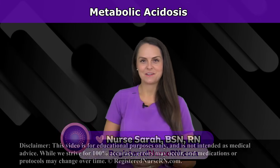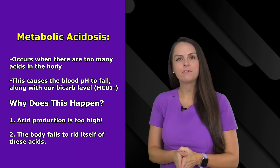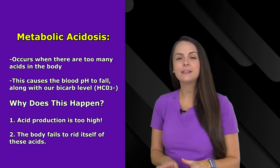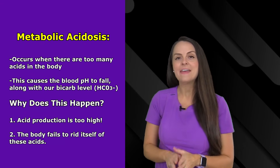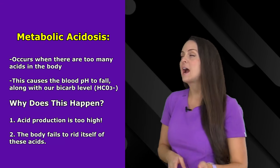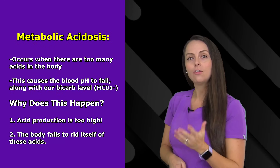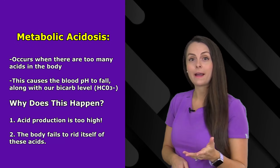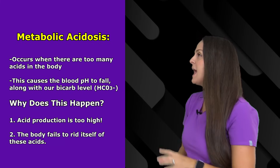Hey everyone, I'm going to talk about metabolic acidosis. Metabolic acidosis occurs whenever we have too many acids in the body, and this leads our blood pH to fall along with our bicarb level, which is the HCO3 level.